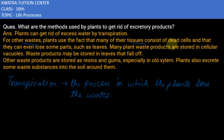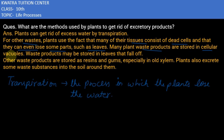For other wastes, plants use the fact that many of their tissues consist of dead cells, and they can even lose some parts such as leaves. Plants shed leaves, and the remaining waste products are expelled into cellular vacuoles.